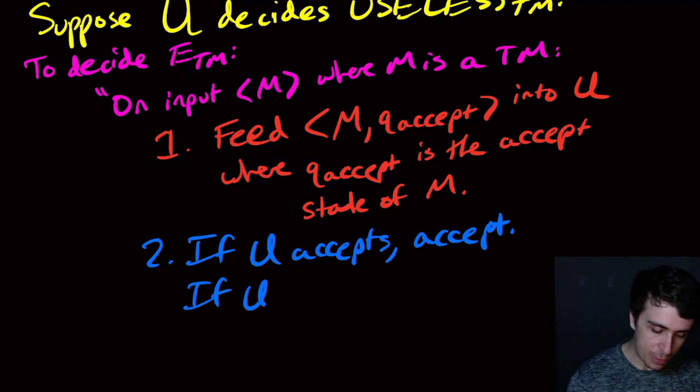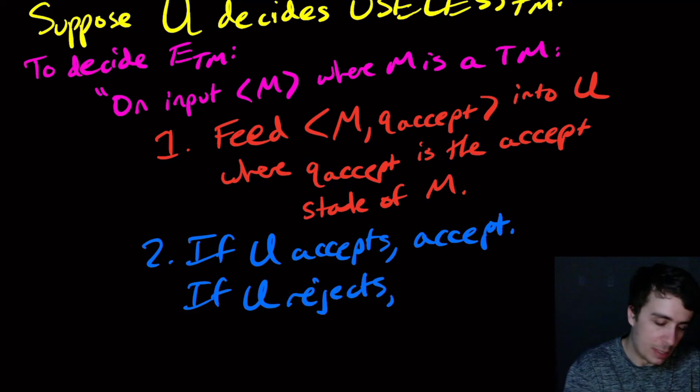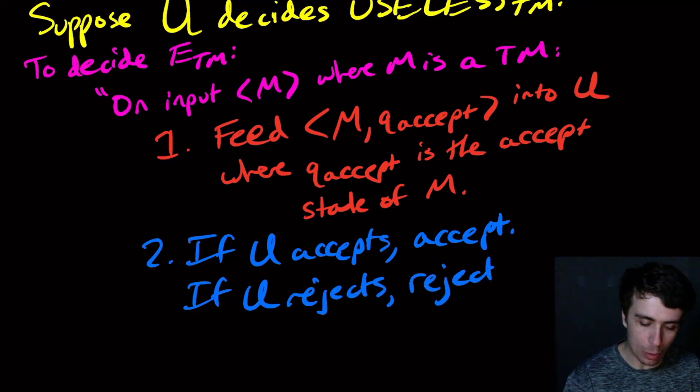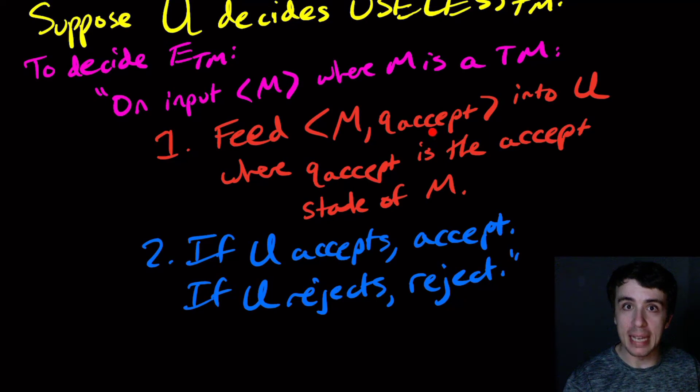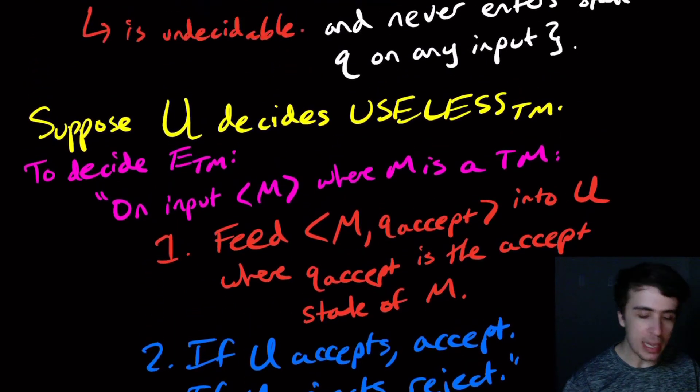And if U rejects, because it's a decider it has to do one of the two, then very similarly we're going to reject also, purely because if it rejects then that means there is a string that hits this state, which means that the language of M is obviously not empty. We know that E_TM is undecidable, so USELESS_TM is also undecidable.